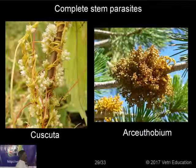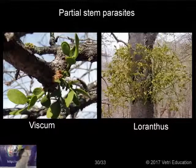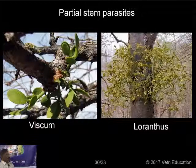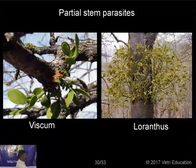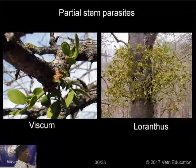Arceuthobium is another total stem parasite that grows on another plant, producing only flowers and fruits. Next, partial stem parasites — look here, they are green in color. Viscum grows on a supporting plant, getting only water and preparing its own food material, producing flowers. Another partial stem parasite is Loranthus — it is also green in color and obtains only water from the supporting plant.